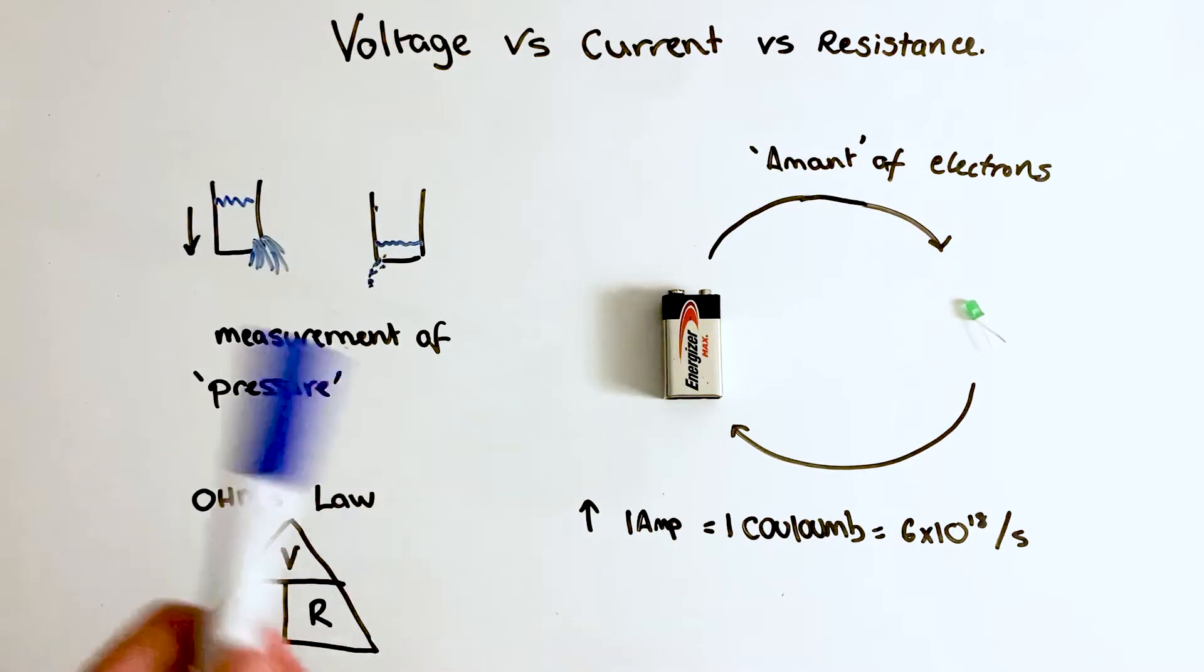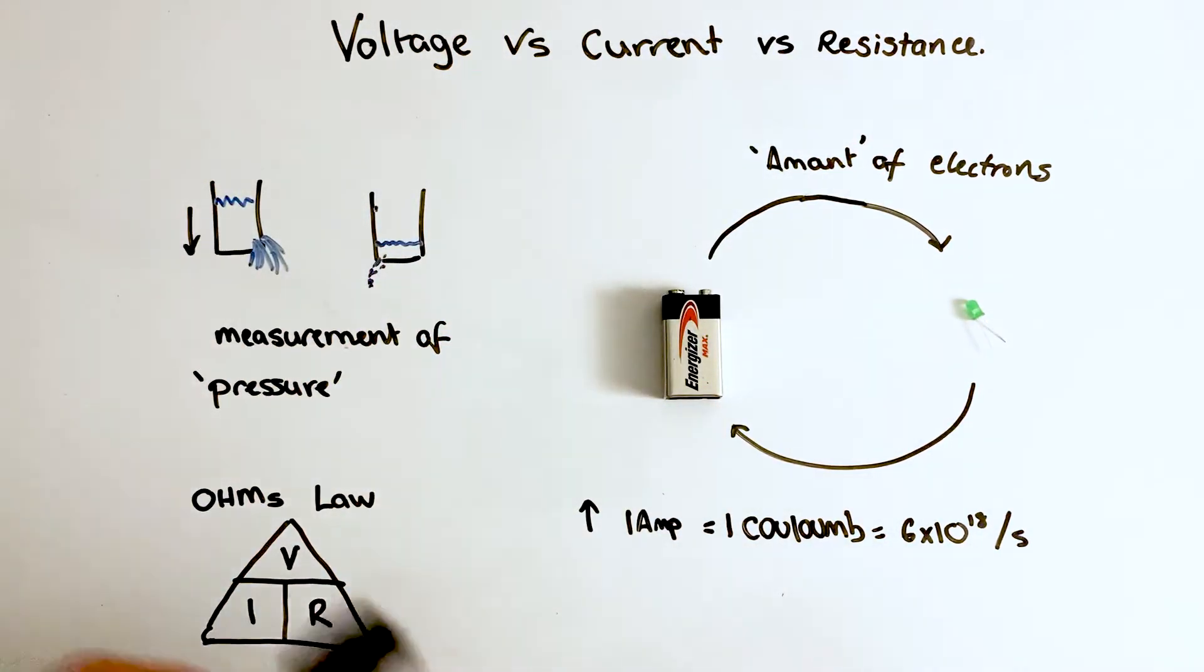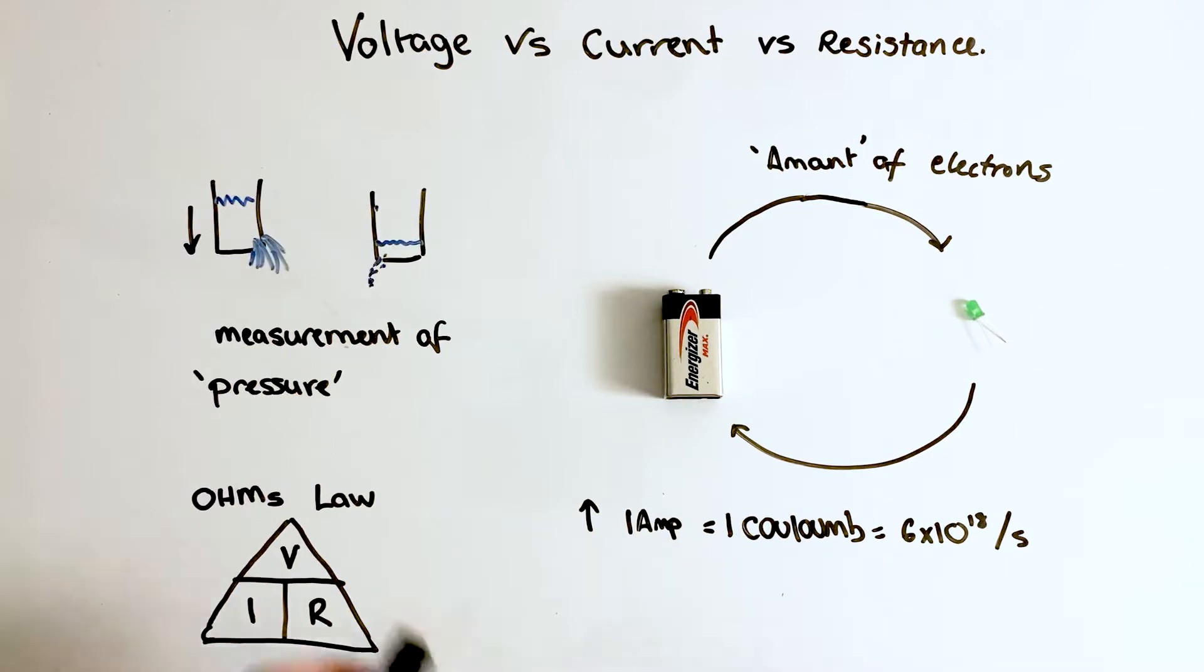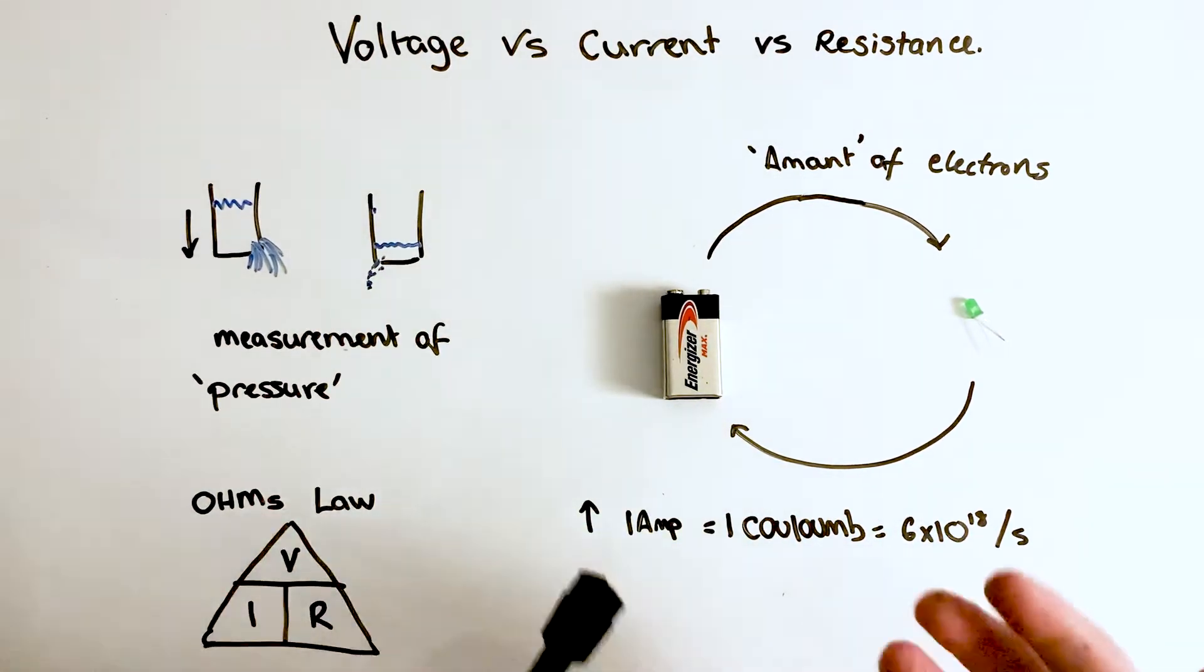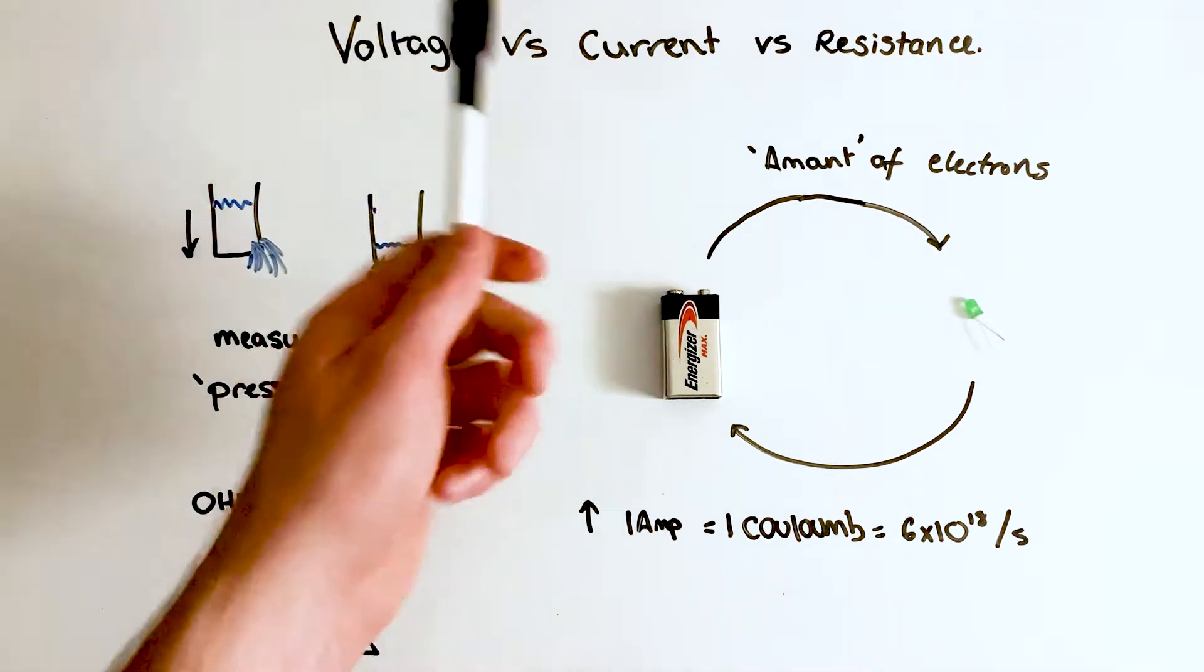All right, today we're going to be talking about the difference between voltage, current, and resistance. When we're starting out and learning about electricity, it's really easy to get these mixed up and trying to visualize what these things really are when we're talking about circuits. So that's the aim of today's video, to talk about these ones briefly and give you a brief overview so you can start to begin your learning journey.